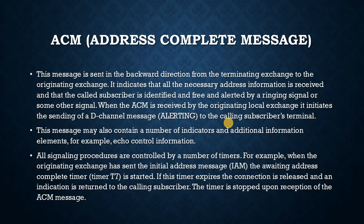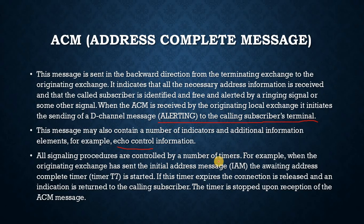ACM, Address Complete Message. This message is sent in the backward direction from the terminating exchange to the originating exchange. It indicates that all necessary address information is received, and that the called subscriber is identified, free, and alerted by a ringing signal or some other signal. When ACM is received by the originating local exchange, it initiates the sending of a D-channel alerting message to the calling subscriber's terminal. This message may also contain a number of indicators and additional information elements, for example echo control information. All signaling procedures are controlled by timers; for example, when the IAM is sent, timer T7 is started and stopped upon reception of the ACM.